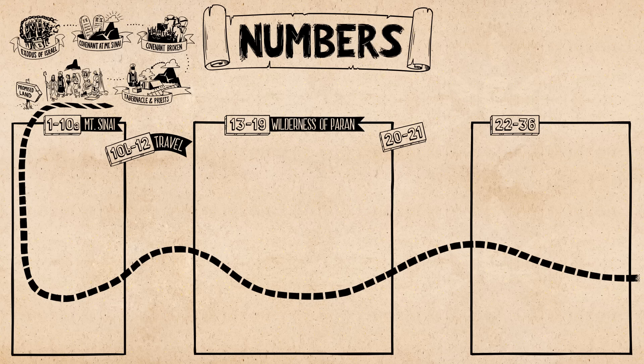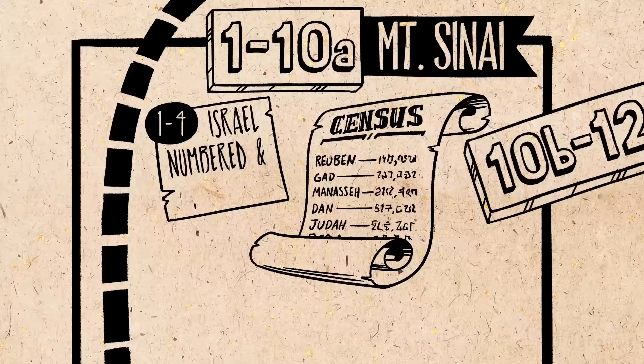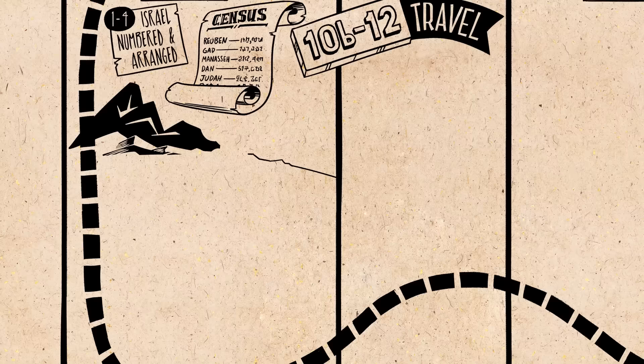The book's storyline is designed according to the stages of their journey. The first section begins at Mount Sinai, but then they set out and travel to the wilderness of Paran. And then from there they travel to the plains of Moab, which is right across from the promised land.